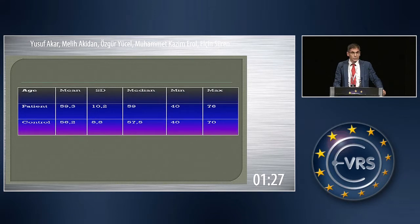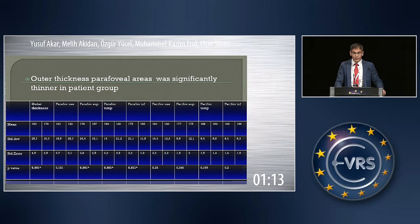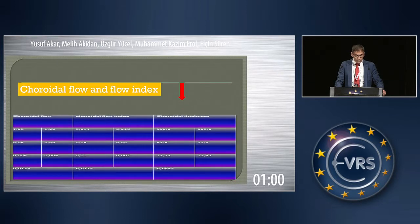There was no difference between the patient and control groups with respect to age. The patient group showed significantly less full macular thickness, inner thickness, and outer thickness of the peripheral region. Choroidal thickness was significantly greater in the patient group, whereas whole vessel density was significantly less. Choroidal flow and flow index were also significantly different, with choroidal flow being significantly less in the macular telangiectasia patients.